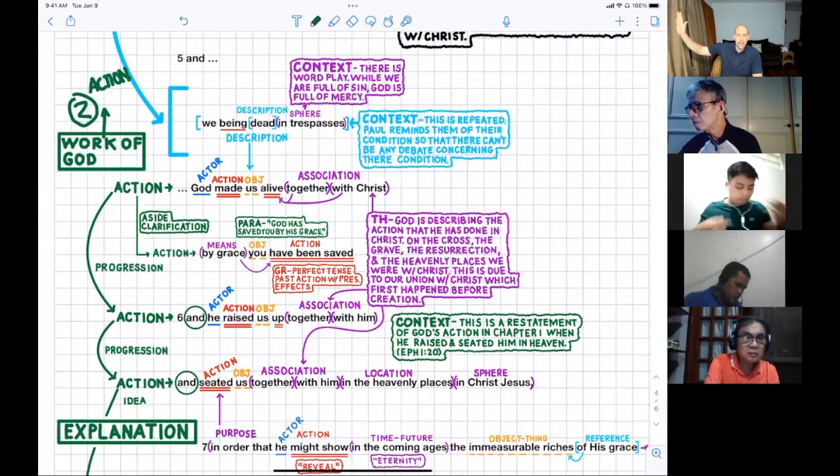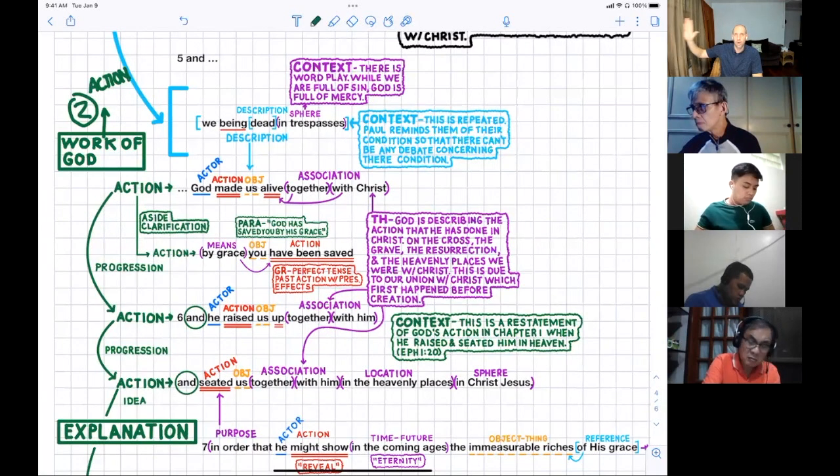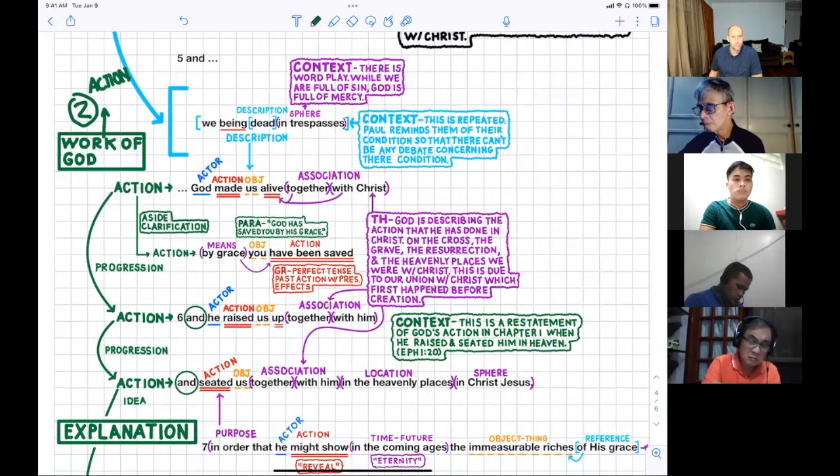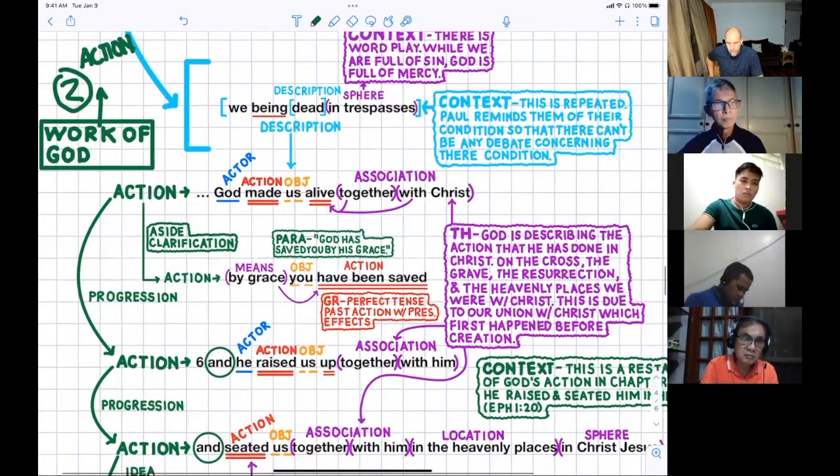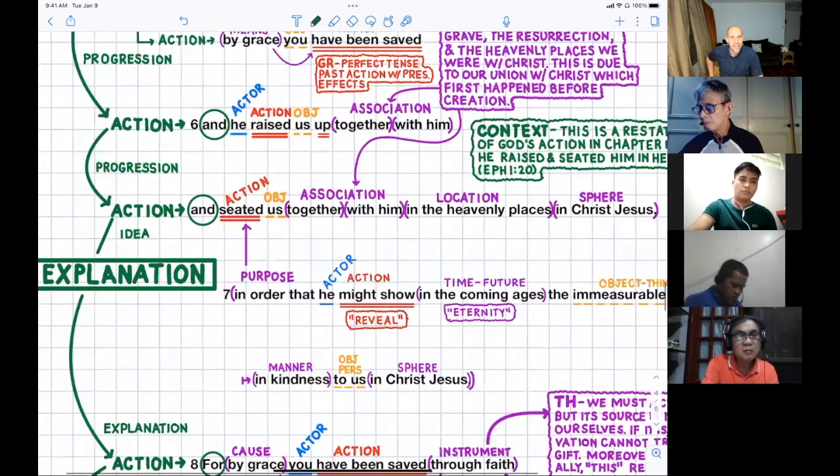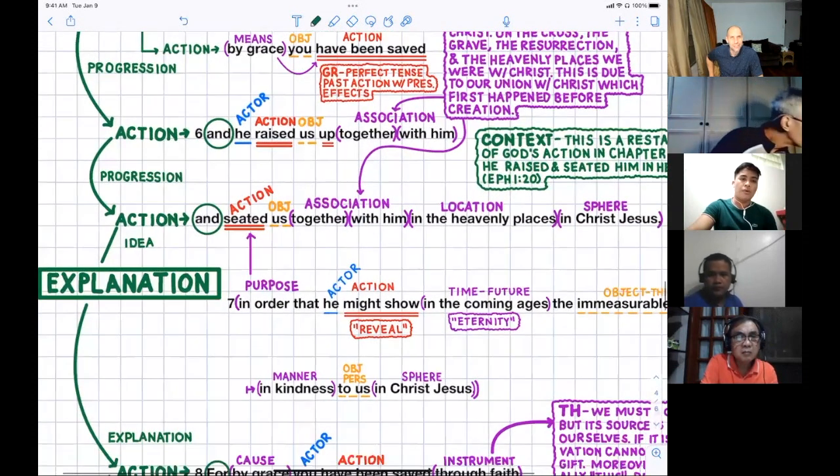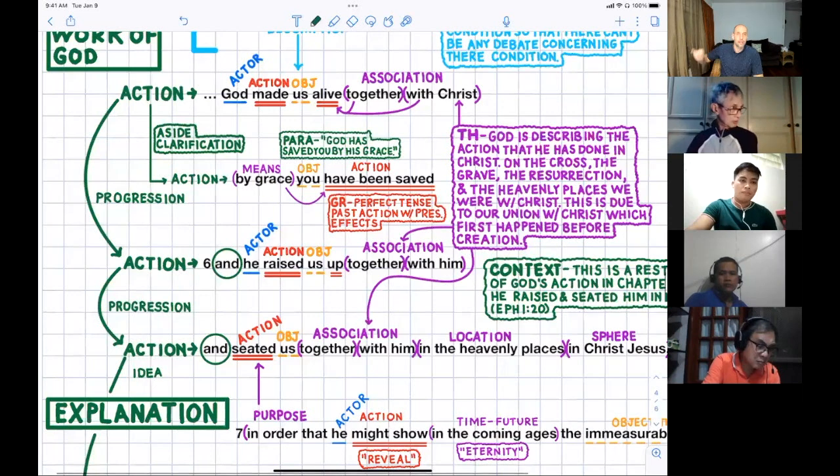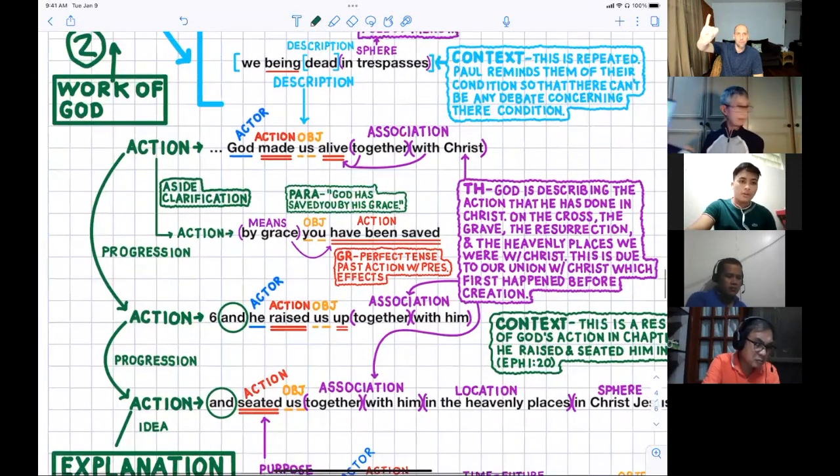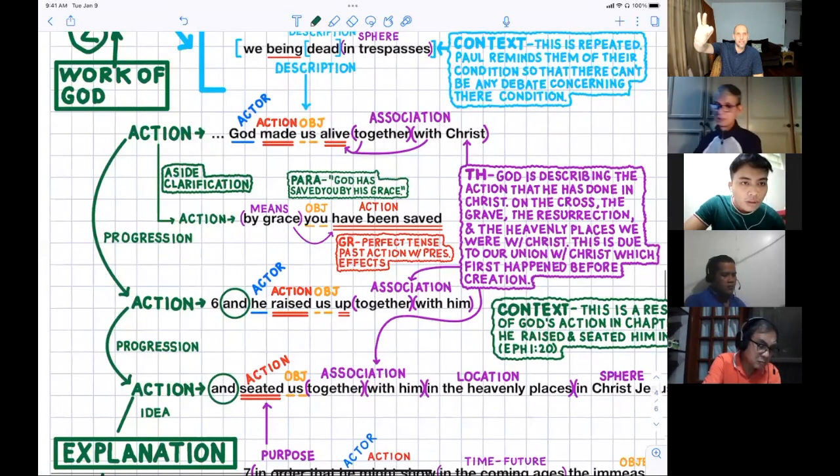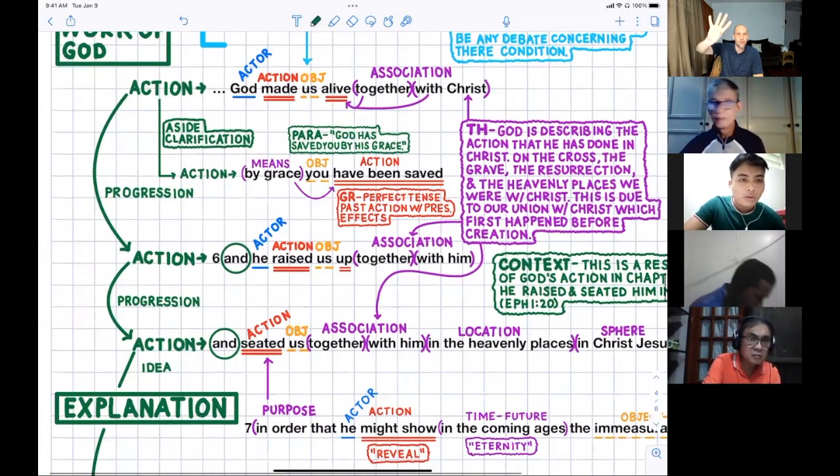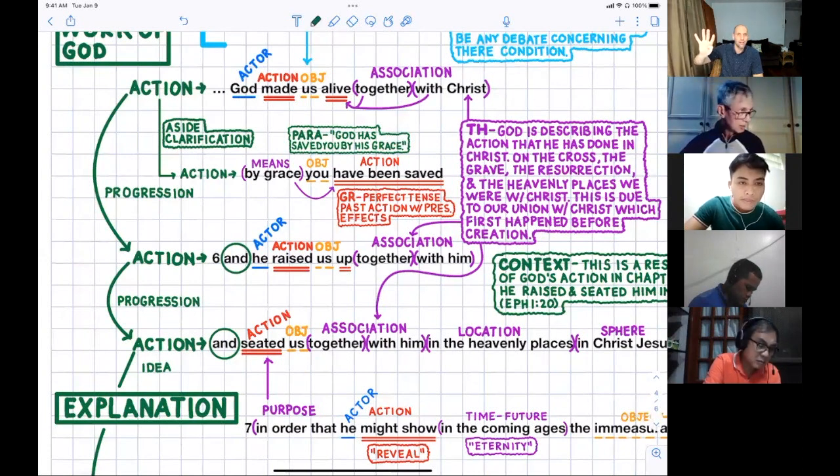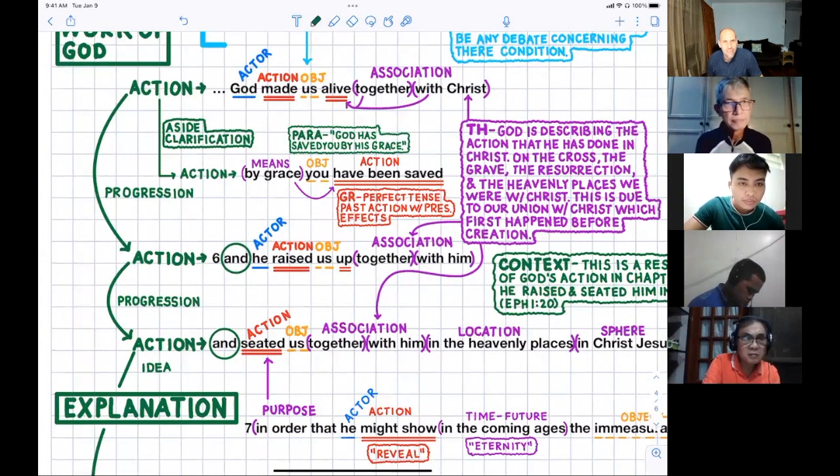Looking at verses five to seven, there's a bunch of actions here. The first major point is what is our status before salvation—who we are, what is God's state. The second major point is the work of God. Look at verse five: God made us alive, God raised us up, God seated us together in the heavenly places. There are four major actions: God made us alive, God saved us by grace, He raised us up together with Christ, and He seated us in the heavenly places. It's all the work of God.